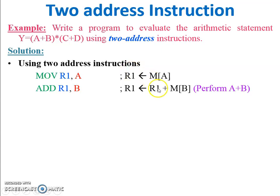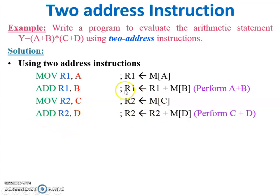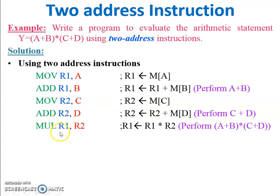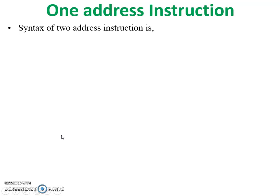Example using two address instruction: MOVE R1, A — data from memory location A is stored in register R1. ADD R1, B — R1 already has A, so A plus M(B) is stored in R1. MOVE R2, C — memory location C stored in R2. ADD R2, D — R2 has C, so C plus D stored in R2. MUL R1, R2 — R1 times R2 stored in R1. Each instruction has only two addresses — one destination and one source.